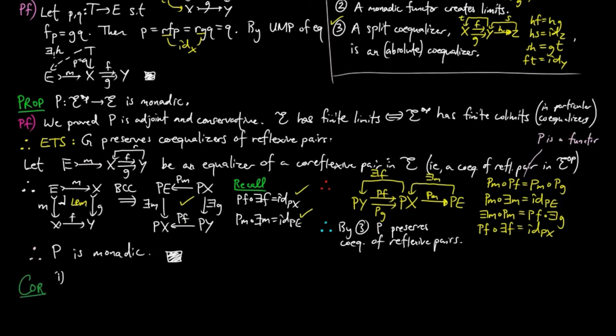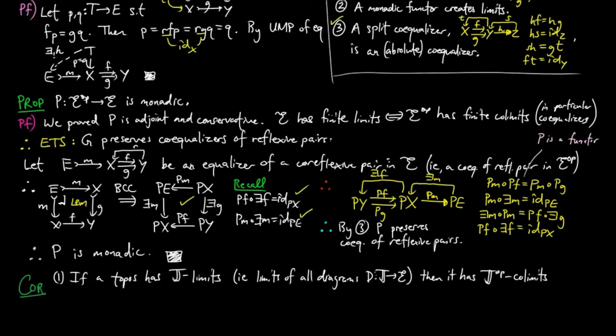Then, as a corollary, we have one, if a topos has J limits, i.e. limits of all diagrams of shape J, then it has J-op co-limits.